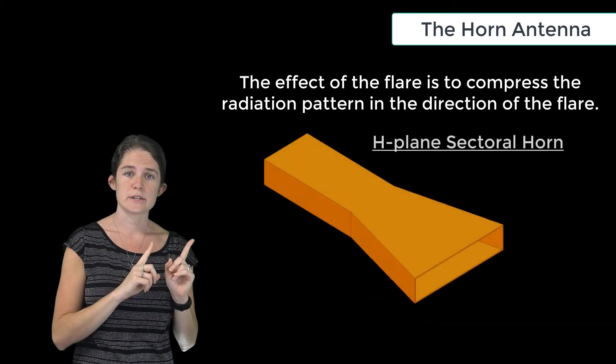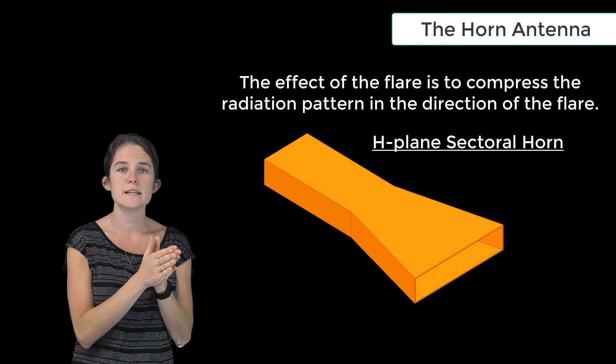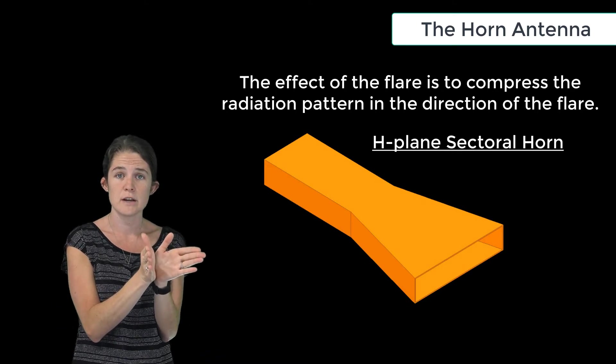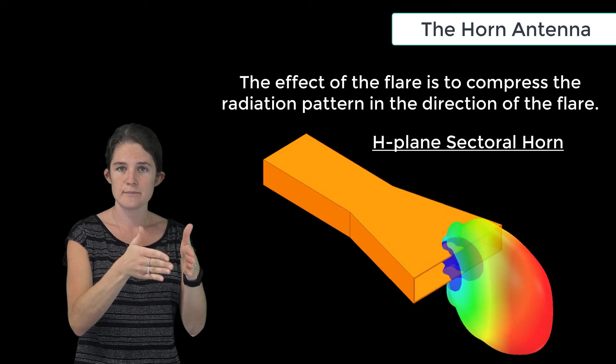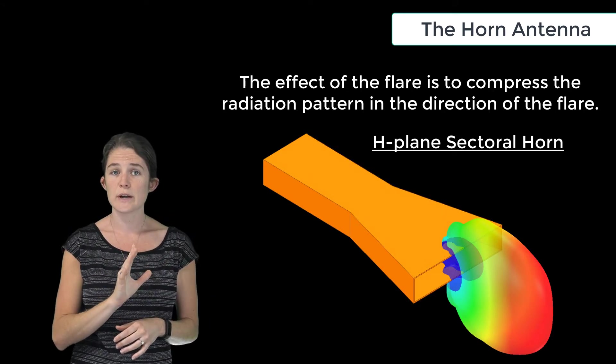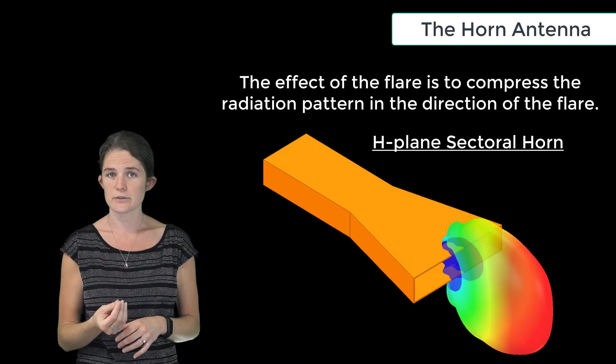The H-plane horn, which looks like this, flares in the horizontal direction, and so the radiation pattern is compressed in the horizontal plane. You'll note, though, that this antenna has quite a wide radiation pattern in the vertical direction.